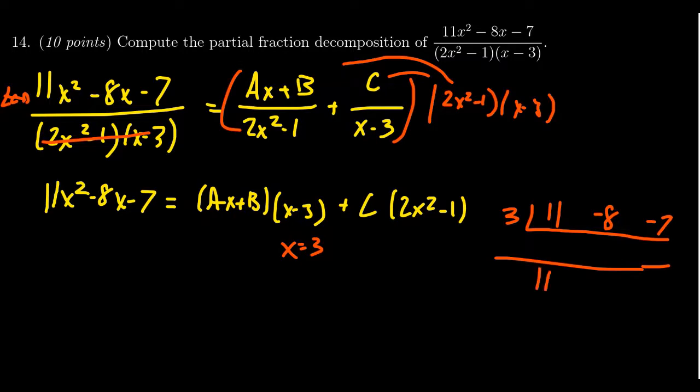So bring down the 11. 11 times 3 is going to be 33 minus 8 is 25 times 3 is 75 minus 7 is 68, like so. So we see that the left-hand side is going to turn out to be 68.